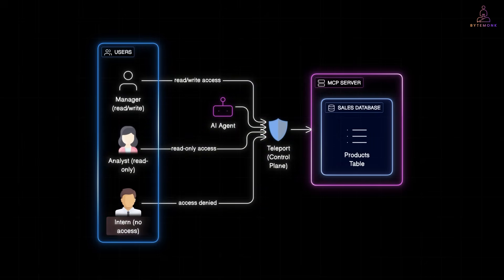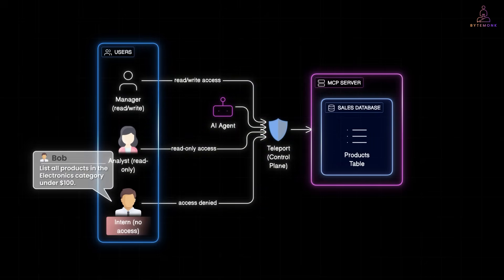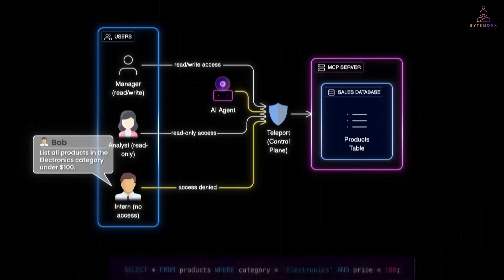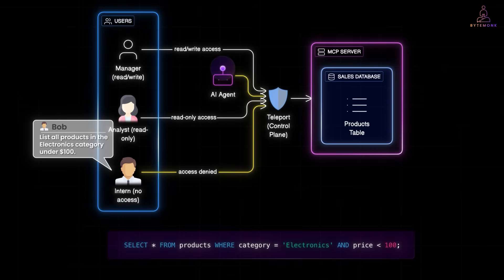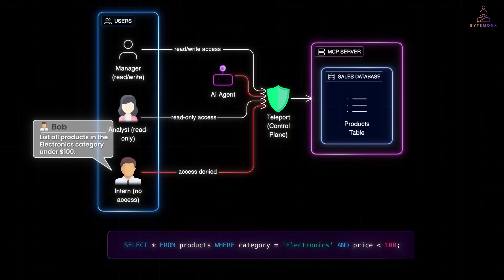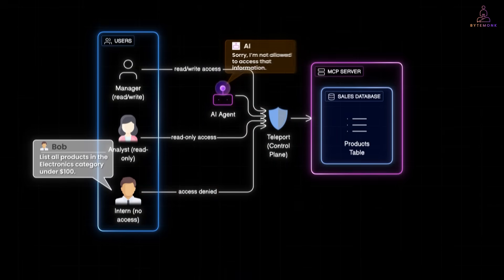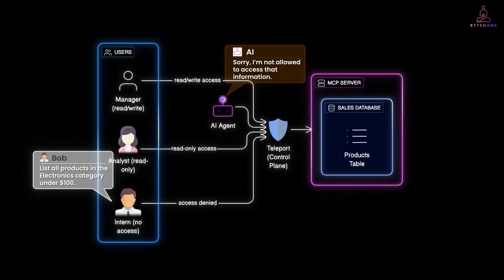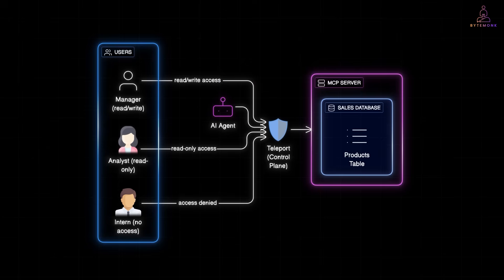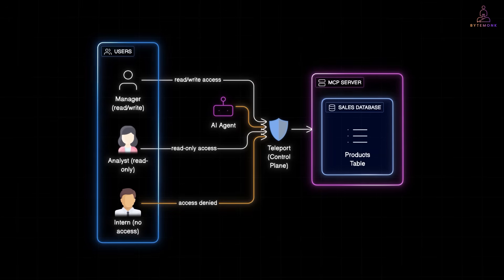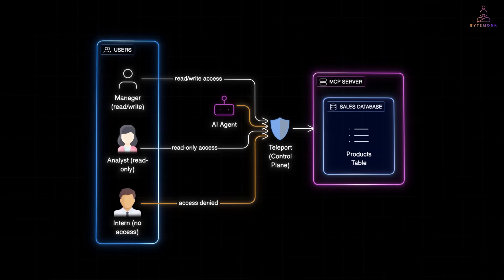Now Bob, an intern, tries the same question. The AI generates the same SQL, but this time Teleport checks Bob's role. He is not authorized. Teleport blocks the query. The AI replies politely: sorry, I am not allowed to access that information. And Teleport logs: Bob via AI attempted to query products — denied.